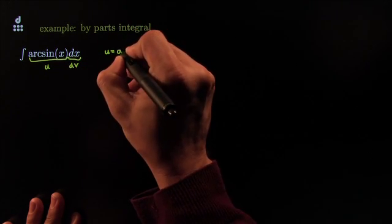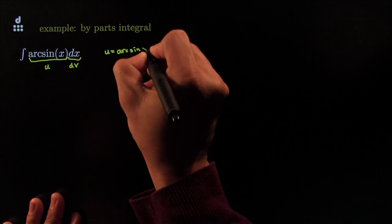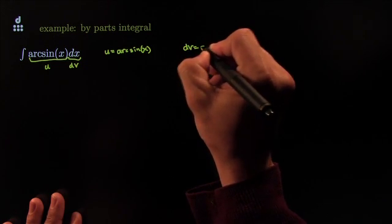We force u to be equal to arcsine of x. That leaves us with no choice. dv has to be dx.